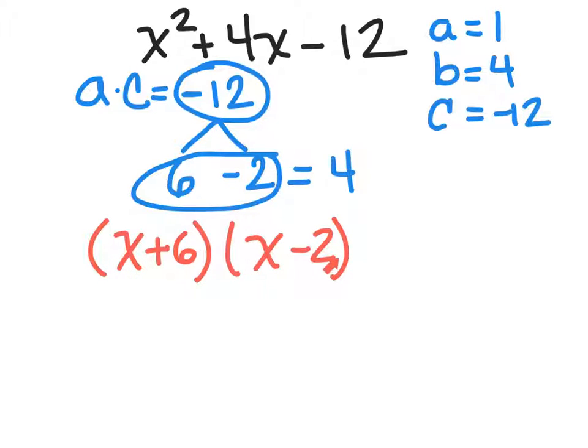So this is what we're saying. If I multiply x plus 6 times x minus 2, I will get x² + 4x - 12. These are my factors.